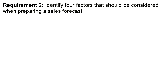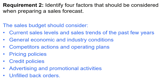The second requirement: identify four factors that should be considered when preparing a sales forecast. The sales budget should consider current sales level and sales trends of the past few years, general economic and industry conditions, competitors' actions and operating plans, pricing policies, credit policies, advertising and promotional activities, and unfilled back orders. Any combination of these four factors works. I would label them one, two, three, four to clearly identify the four factors — this is not the complete list.